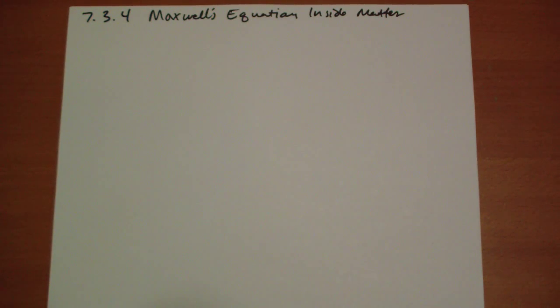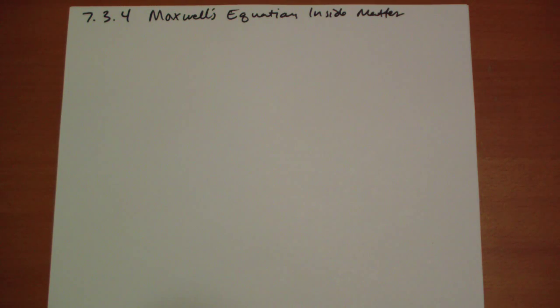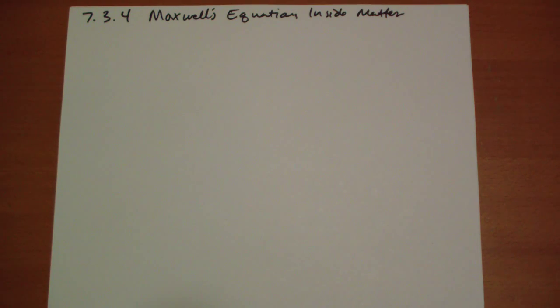Hi, this is Jonathan Gardner. We're covering section 7.34 of Griffith's Introduction to Electrodynamics, 2nd edition. If I go too fast, you can rewind. If you like what I'm doing, be sure to like and share with your friends so they can watch it too.